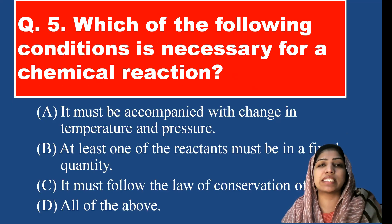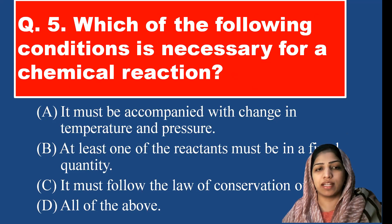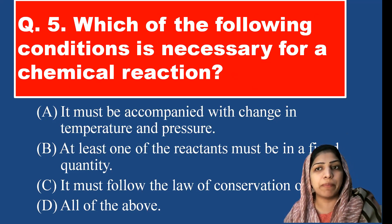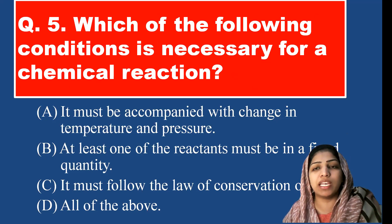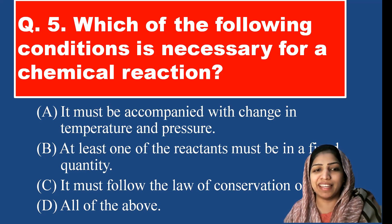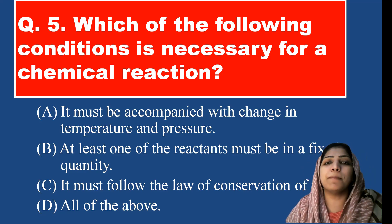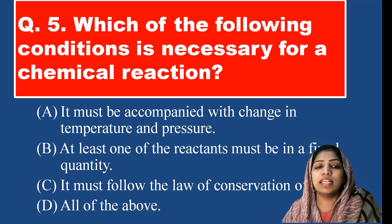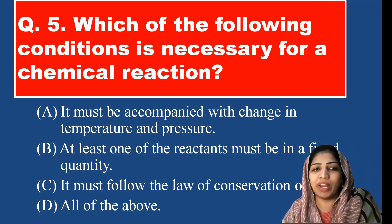Which of the following conditions is necessary for a chemical reaction? A chemical reaction must be accompanied with a change in temperature, but change in pressure is not mandatory. At least one reactant must be in a fixed quantity is also not a necessary condition. However, it must follow the law of conservation of mass — reactants and products must be equal. All of the above is not correct because options A and B are wrong. The correct answer is that it must follow the law of conservation of mass.